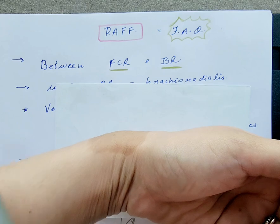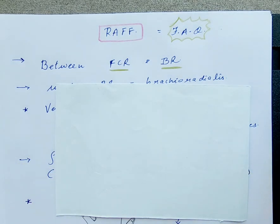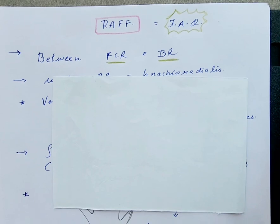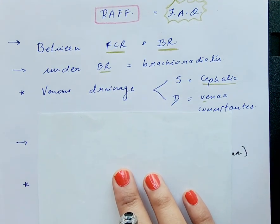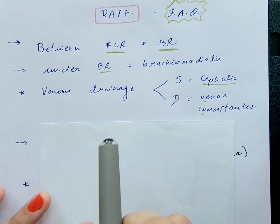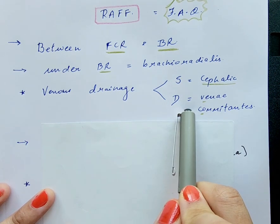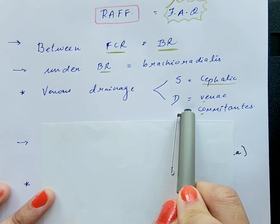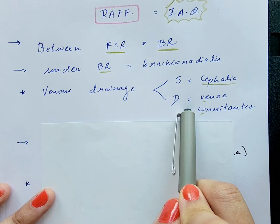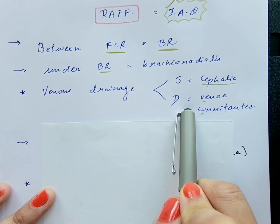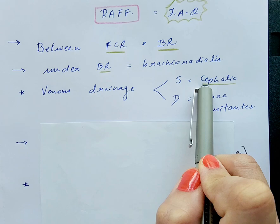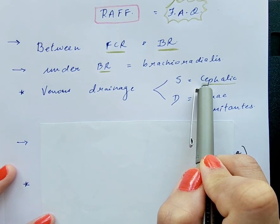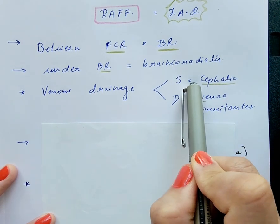Once we retract the brachioradialis, the radial artery — the pedicle of this flap — along with the vena comitants, runs below the brachioradialis. Venous drainage of this flap is by the vena comitants, which go along the length of the radial artery and form the deeper part of venous drainage. The superficial part, considered one of the more important components, is the cephalic vein.